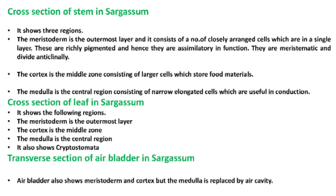Cross section of leaf in Sargassum shows the following regions: the meristoderm is the outermost layer, cortex is the middle one, and the medulla is the central region. It also shows cryptostomata. The transverse section of air bladder in Sargassum also shows meristoderm and cortex, but the medulla is replaced by an air cavity.